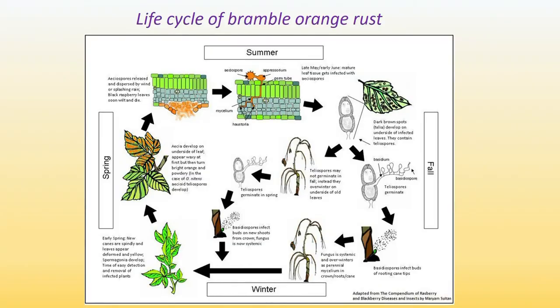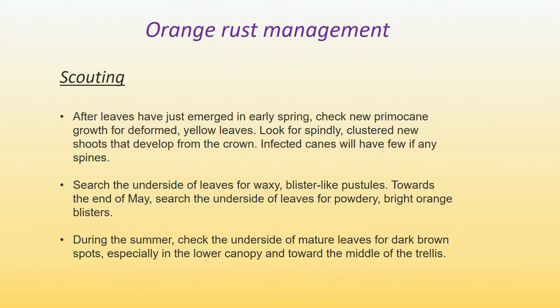If you pay attention, you'll notice that infection happens two times in a season — during spring and during fall. Scouting is very important. After leaves have just emerged in early spring, check new primocane growth for deformed yellow leaves. Look for spindly clustered new shoots developing from the crown — the canes will have few if any spines. Search the underside of leaves for waxy blister-like pustules. Towards the end of May, search for bright orange blisters on the underside of leaves. During summer, check the underside of mature leaves for dark brown spots, especially in the lower canopy and towards the middle of the trellis.